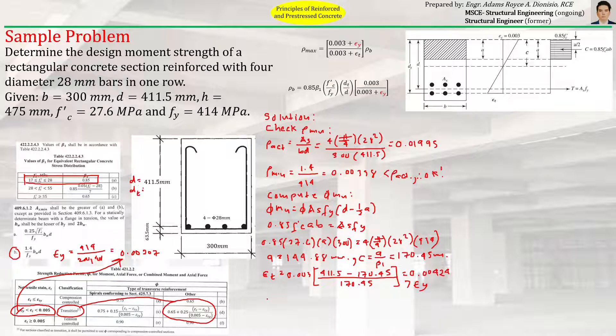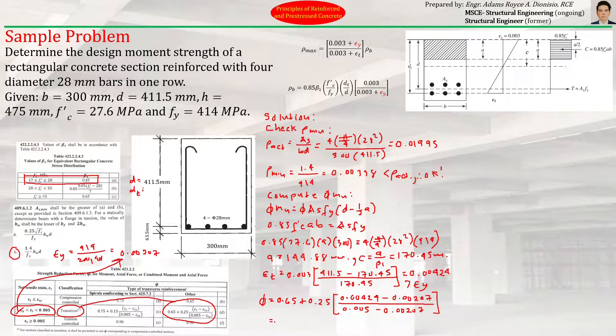Using that, φ equals 0.65 plus 0.25 times (εt - εy) over (0.005 - εy), which is 0.65 plus 0.25 times (0.00424 - 0.00207) over (0.005 - 0.00207). So φ equals 0.84.